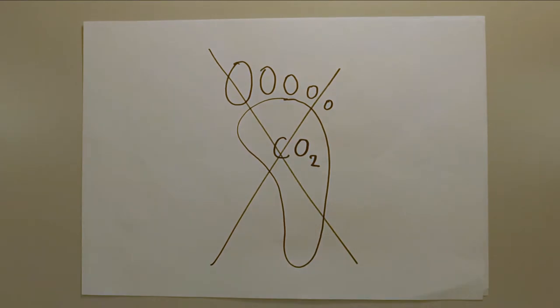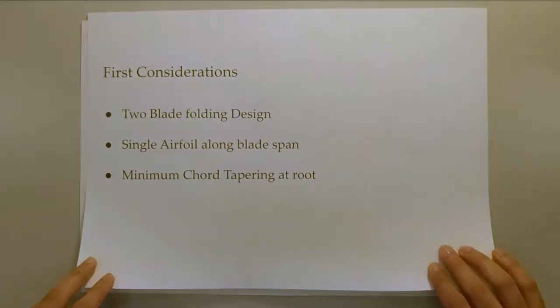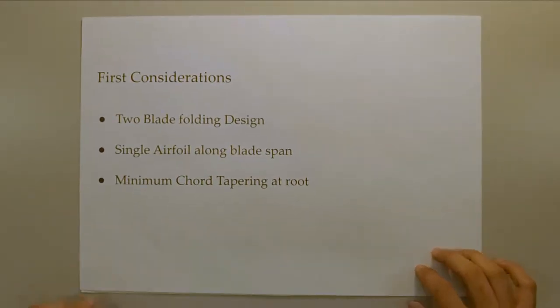Our project was about maximizing the power output of a turbine from a given set of constraints. Our first consideration was to go with the two-blade design, which folded thanks to a hinge mechanism to aim for a larger blade design within the size constraint.